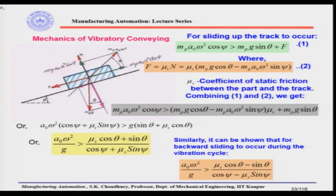Let us look at the mechanics of vibratory conveying. Consider a small part located on the track of the vibratory bowl feeder. The track is inclined to the horizontal at angle theta. The part has mass mp, and the overall resulting inertia force due to vibration is mp·a0·ω², where a0 is the linear acceleration of the part on the track and ω is the angular velocity.